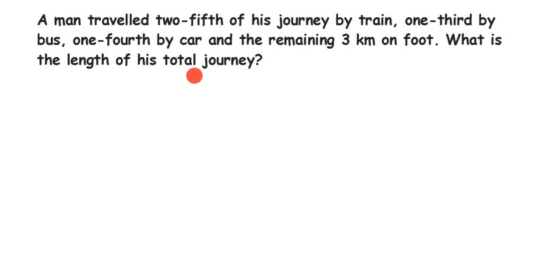Now, they have given that a man travelled using different fractions — two-fifths of his journey by train, one-third by bus, one-fourth by car, and the remaining three kilometers on foot — and we have to find the total journey. Since everything is given in terms of the total journey, we need to assume the total distance to be some variable.